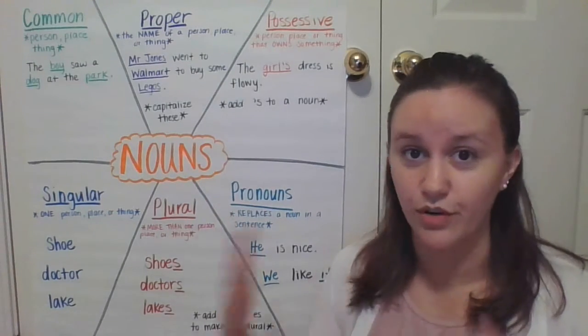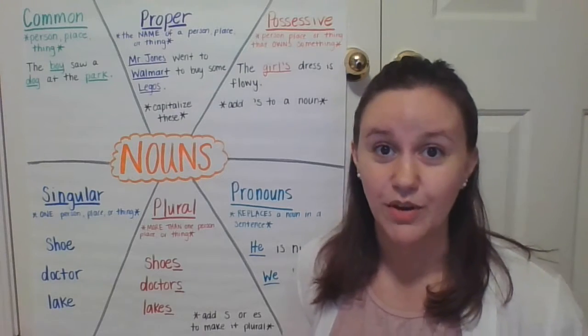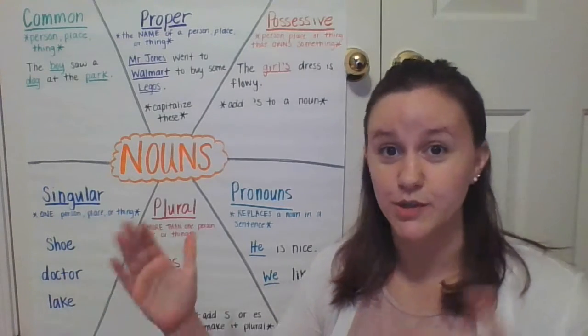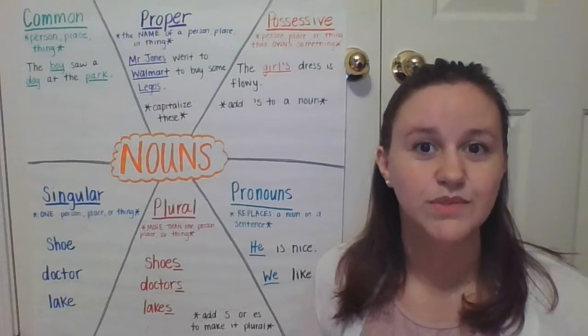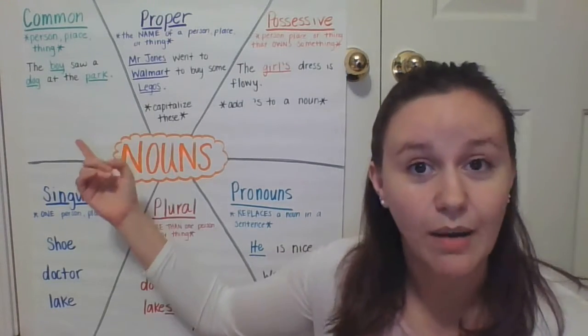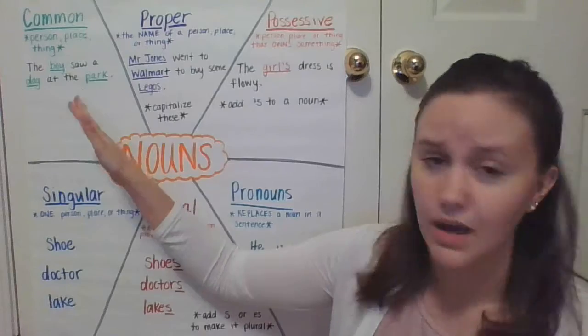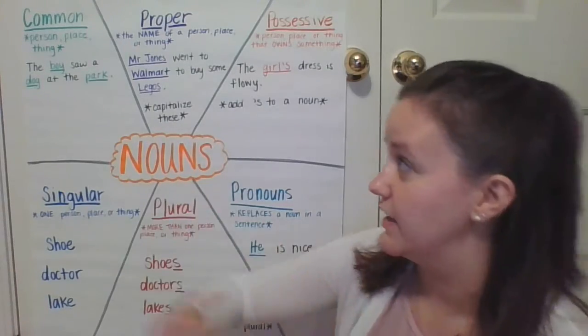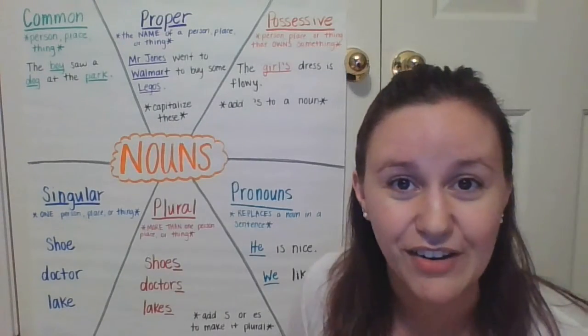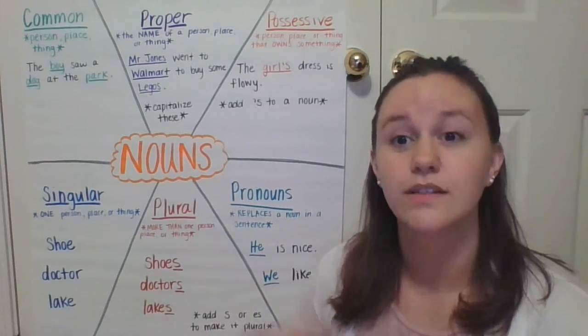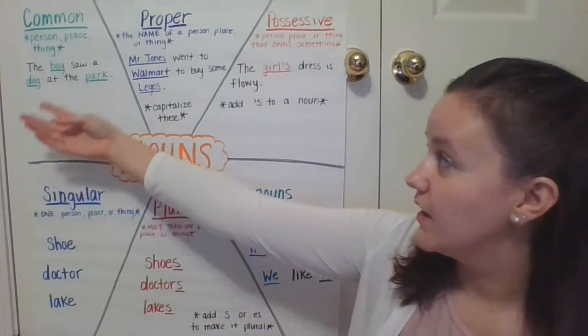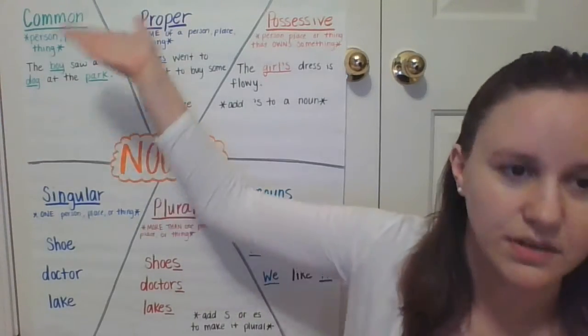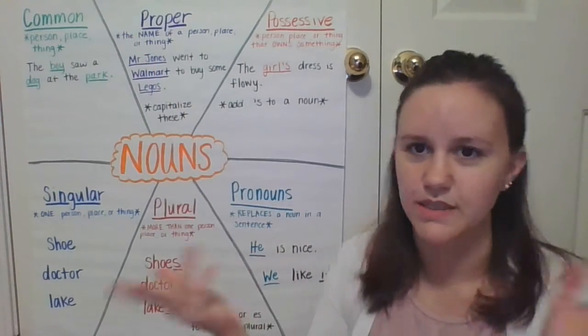So we're talking about nouns. We've learned about nouns a long time ago. We talk about a noun as a person, place, or thing. Animal, idea. Those are nouns. So we talk about common nouns. A common noun is just a person, place, or thing. I colored and underlined the nouns in this sentence. The boy saw a dog at the park. The boy, that's a person. A dog, thing, park, place. Common nouns. Person, place, thing.